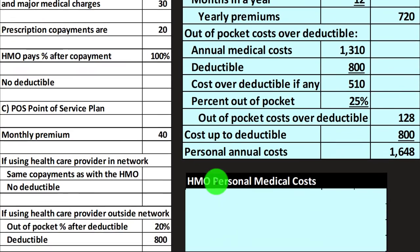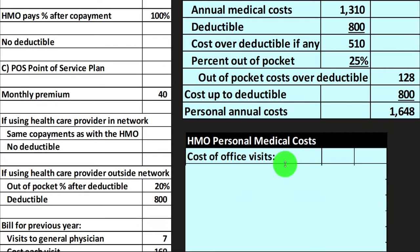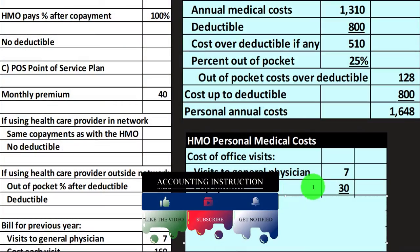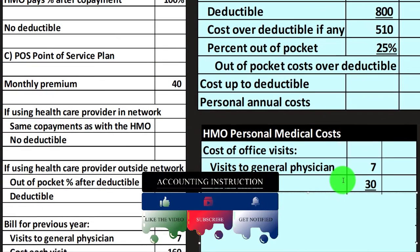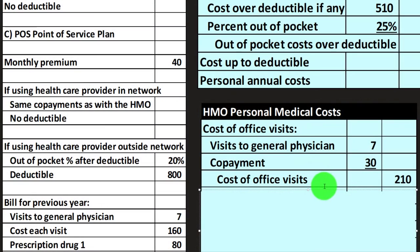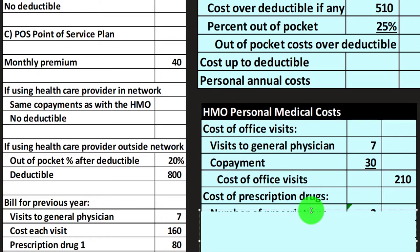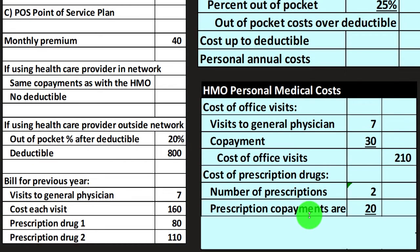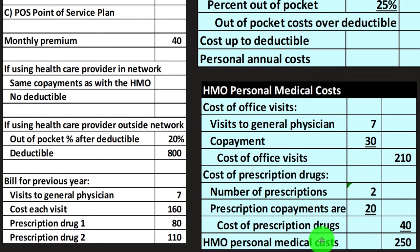For Plan B, the HMO, the employer pays the premiums so we don't need to account for those. We have seven visits to the physician with a copayment of $30 each — assuming we're going to a doctor in-network — giving us $210 for office visits. For prescription drugs, we have two at $20 each, totaling $40. So $210 plus $40 comes out to $250 total for the HMO.